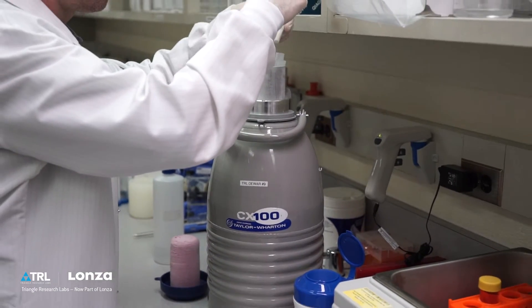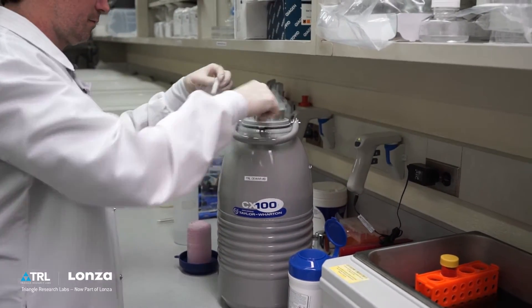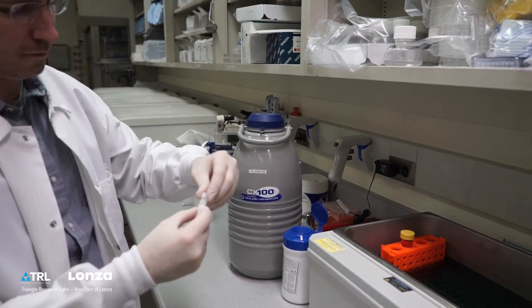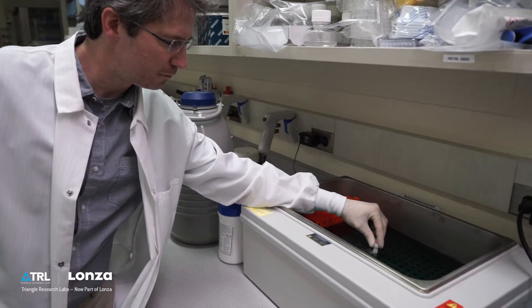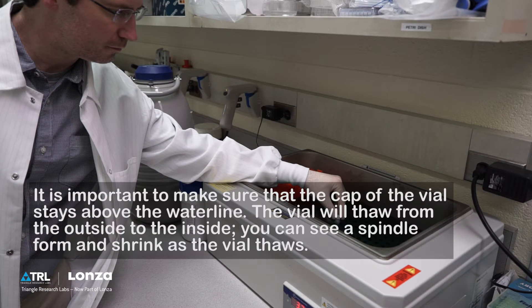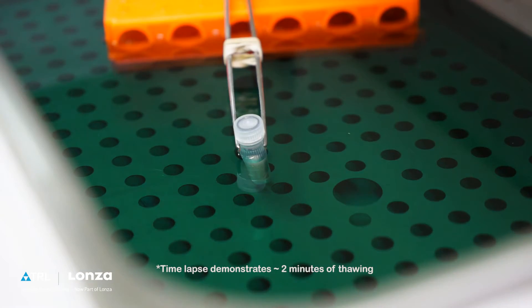Quickly remove the cryopreserved hepatocytes from their storage location. In the water bath, vertically submerge as much of the vial as possible up to the cap. It is important to make sure that the cap of the vial stays above the waterline to prevent possible contamination. Thaw the vial for 90 to 120 seconds. The vial will thaw from the outside to the inside, forming a spindle. Ideally, a thin ice spindle should remain.